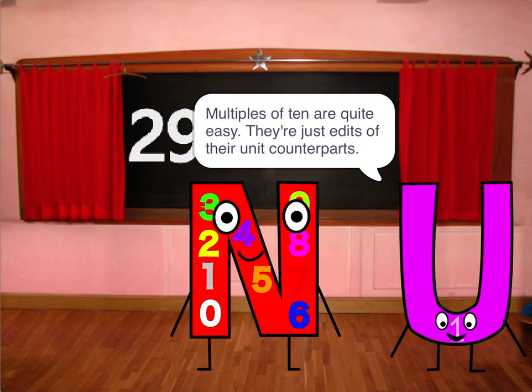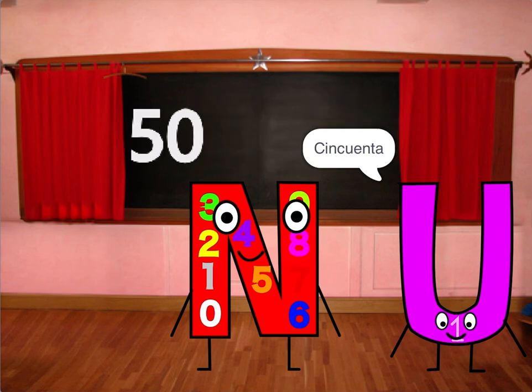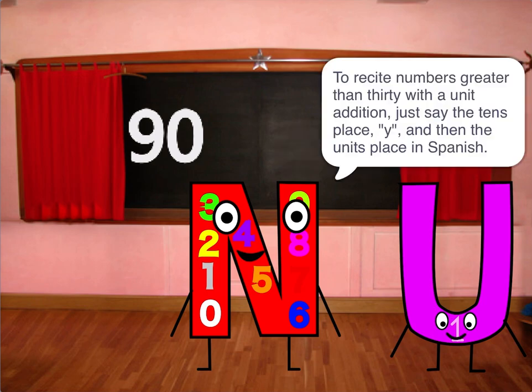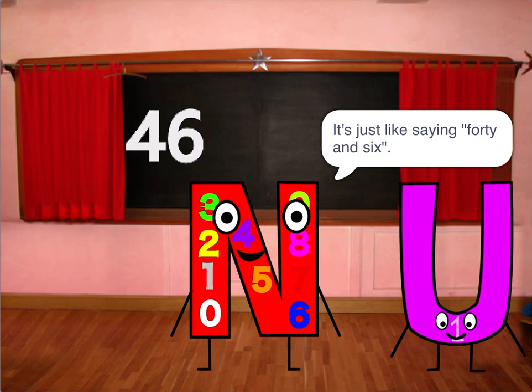Multiples of ten are quite easy — they're just edits of their unit counterparts. So treinta means 30, cuarenta means 40, 50, 60, 70, 80, and 90. To recite numbers greater than 30 with a unit addition, just say the tens place, then 'y', and then the units place in Spanish. So 46 means cuarenta y seis — it's just like 40 and 6.